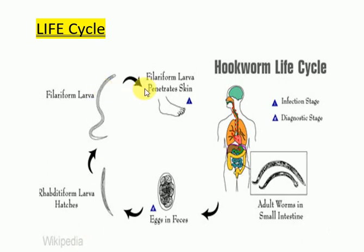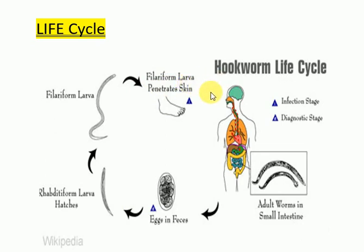The filariform larva is infective to humans; it casts off its sheath and enters the body by penetrating the skin. You can see the filariform larva entering through the skin of the foot of a person. Once inside the body, it enters the subcutaneous tissue, then into the lymphatics or small venules, passes through the venules into the circulation to reach the right heart, and from the right heart it enters the pulmonary circulation.